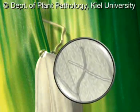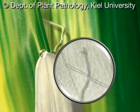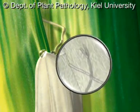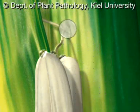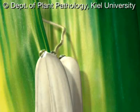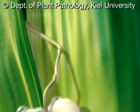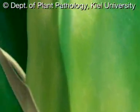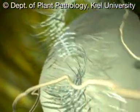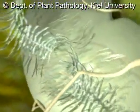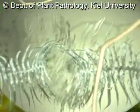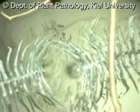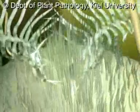Starting from the anthers, the hyphae often develop toward the filaments to which the anthers are attached. And along these, penetrate deep into the interior of the wheat floret, passing the remnants of the stigma and the style.